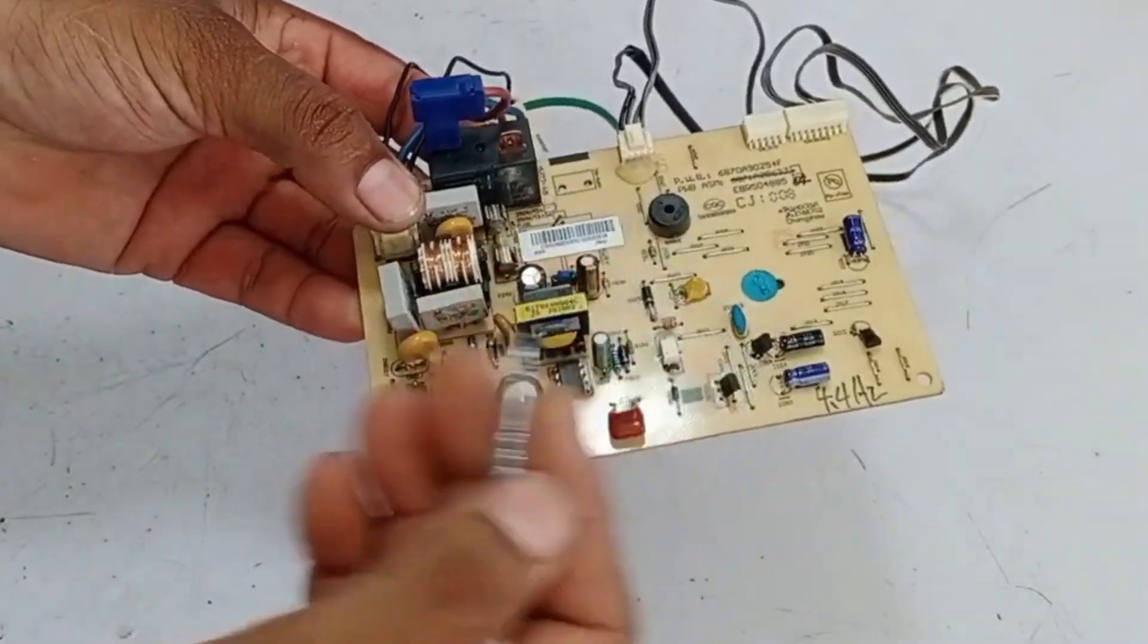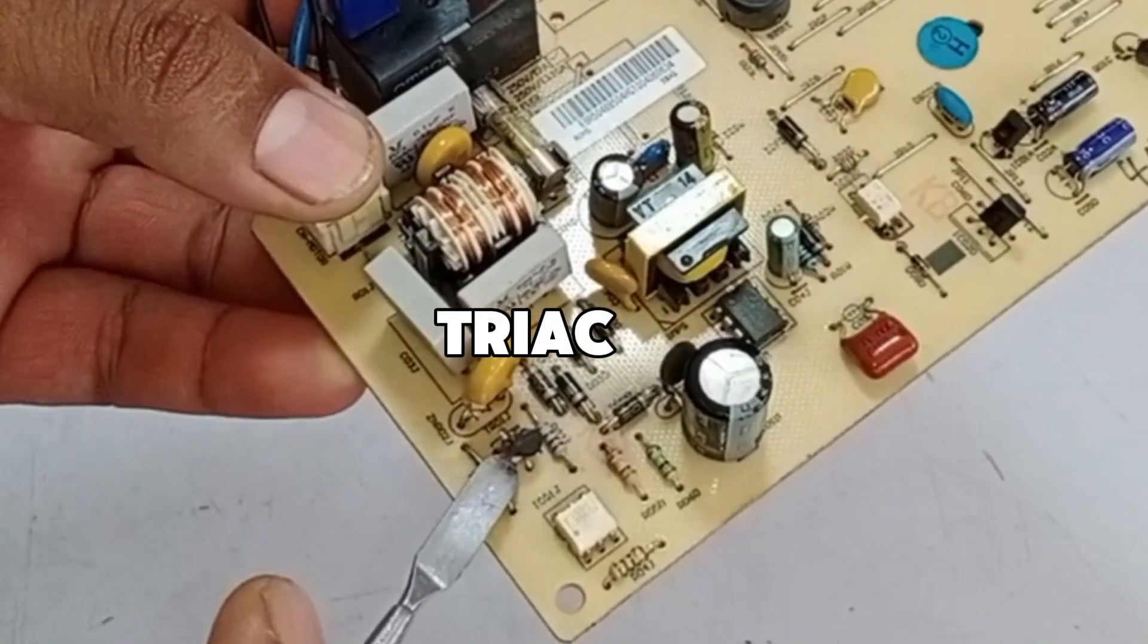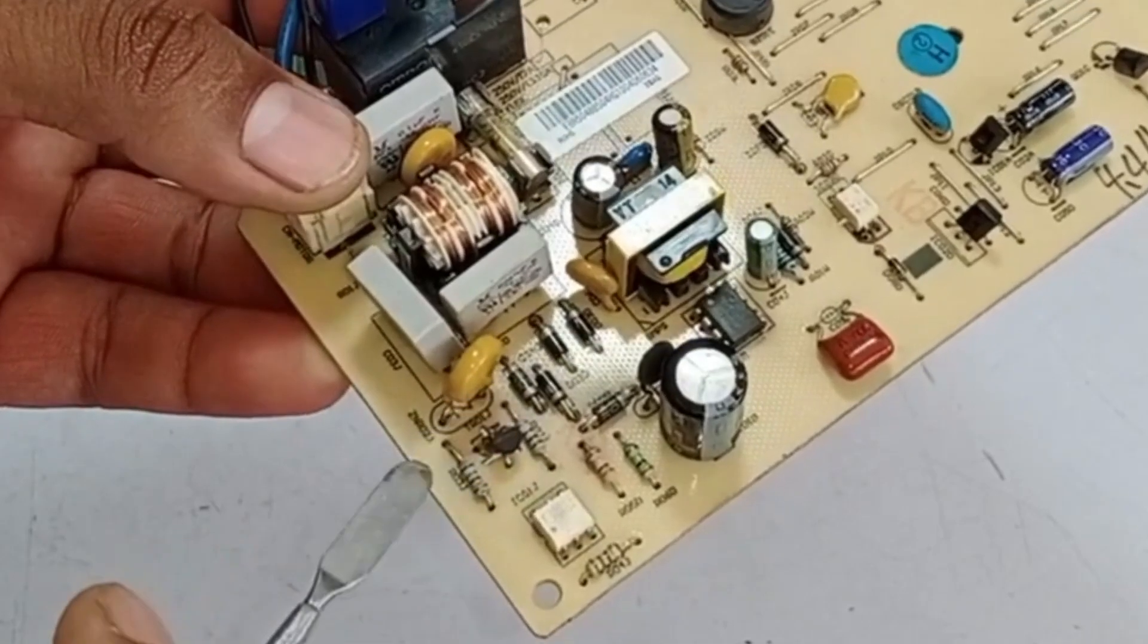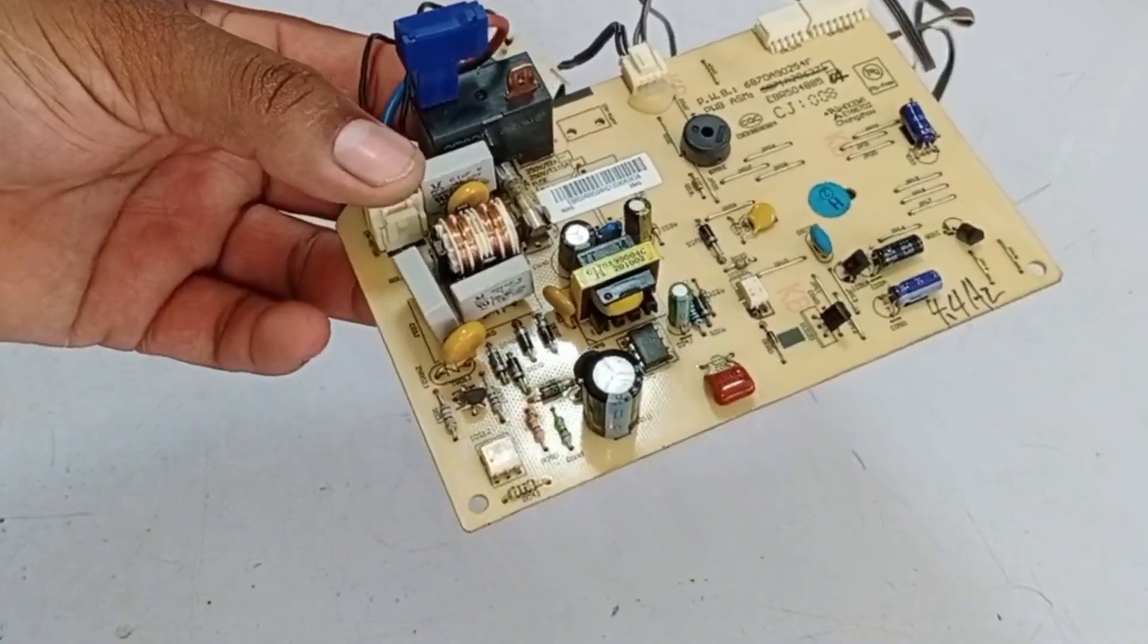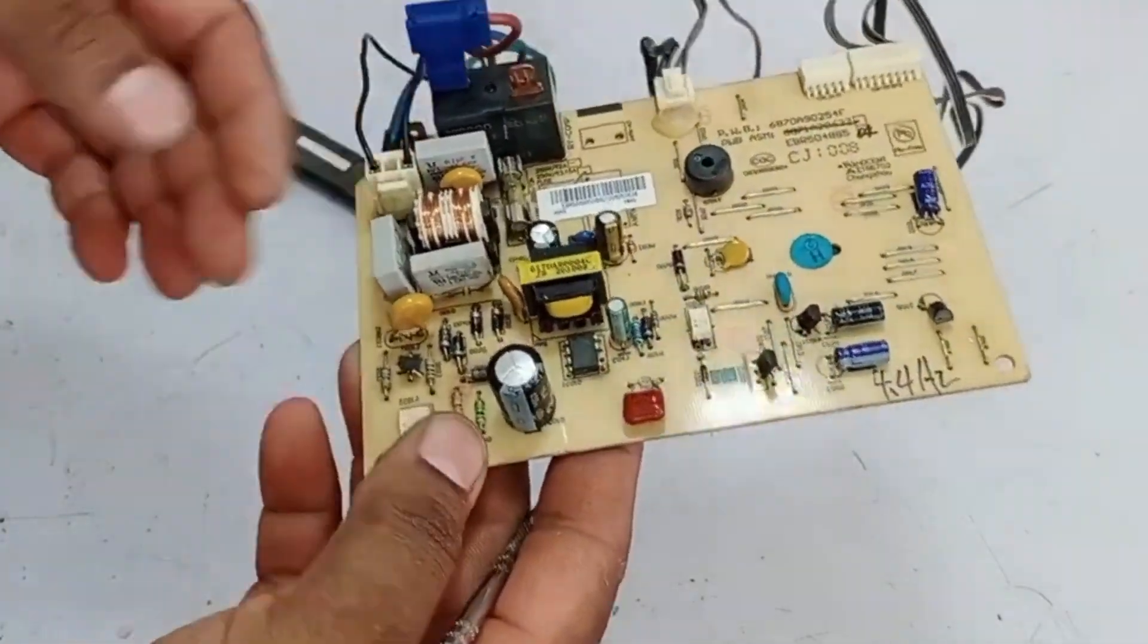In this way, the speed is also controlled from here, because the more voltage is given to the triac, the more it will open. This means the speed can be slow or fast. If the voltage is low, the speed will be slow, and if the voltage is high, the speed will increase. This is how the control is managed.